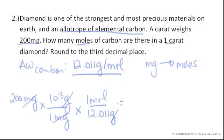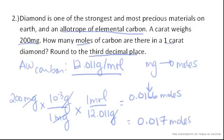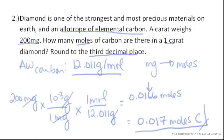Multiply that out and we find that we get 0.0166 moles. But we need to round to the third decimal place, which is this one. When you do, you find that it is 0.017 moles of carbon. Corresponds to 1 carat diamond. Pretty nice.